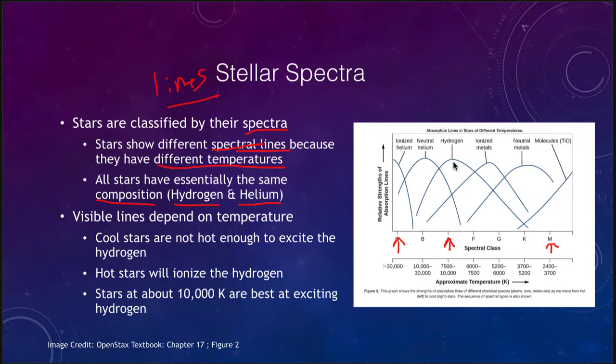The reason we do not see hydrogen lines in a class M star, or a very cool star, is that cool stars are not hot enough to excite the hydrogen gas and cause it to glow. For very hot stars, the hydrogen line strength also drops off because hot stars will ionize the hydrogen. A hydrogen atom has one proton and one electron — if we rip off that electron, it has nothing to form spectral lines with. So for very hot stars, we will not see hydrogen lines either.